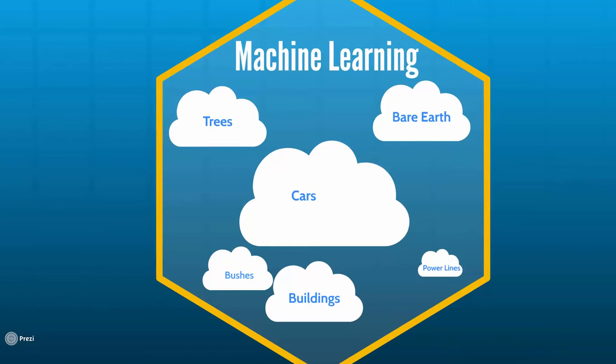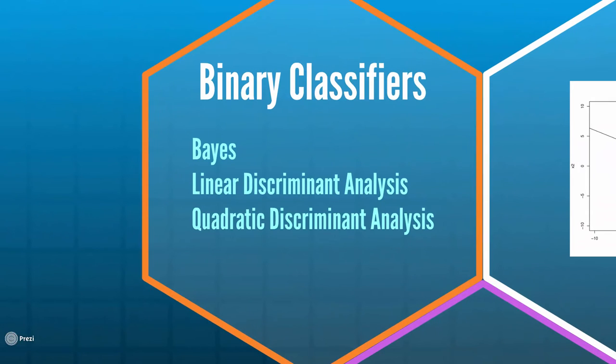At first, we tried several binary classifiers, namely Bayes, Linear Discriminate Analysis or LDA, and Quadratic Discriminate Analysis or QDA.